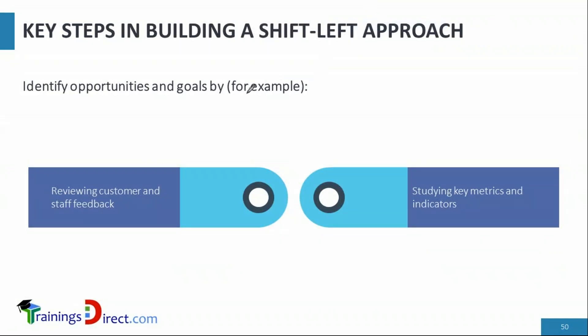Going step by step in a shift left approach — the first step is to identify opportunities and goals. It shouldn't be done randomly, with a senior person simply saying 'let's mix up all the teams so things will be faster.' That is the wrong approach.